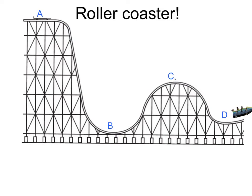Let's look at the different types of energy a roller coaster has along its journey. Let's say the roller coaster starts at point A and goes down the track to point B, then to C, and ends at point D. What type of energy does the roller coaster have at the top when it's not moving but has a height?